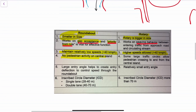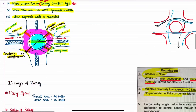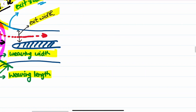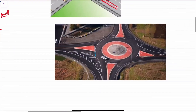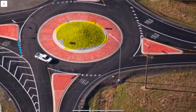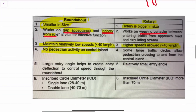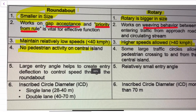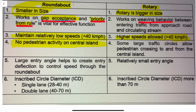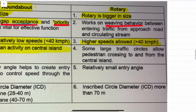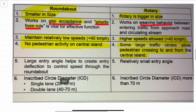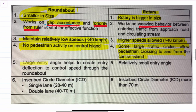In the central island of a roundabout, because it is smaller, there is not much activity that can be planned. In a rotary, the central island is bigger, so it can be used as a pedestrian crossing, a small park, or for multiple other purposes.